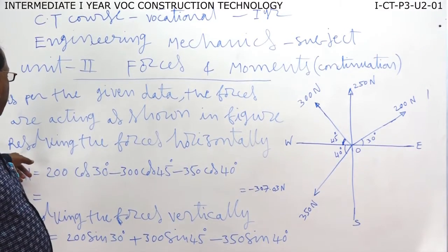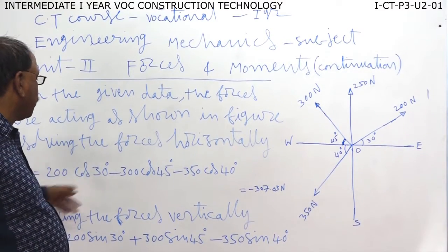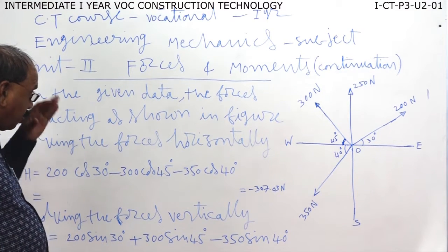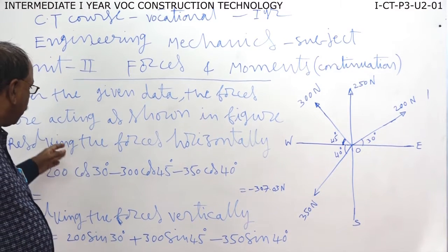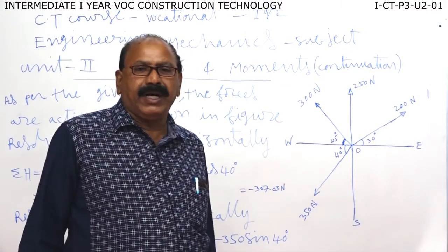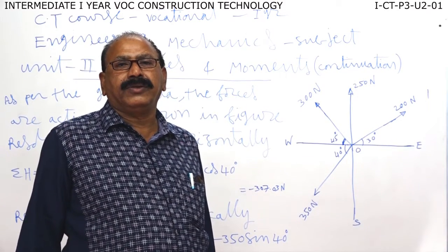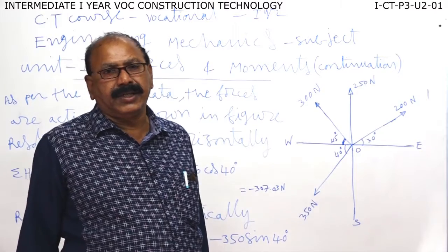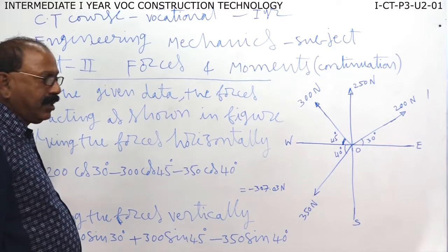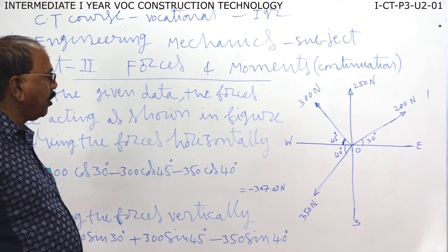First, resolving the forces horizontally — the forces are resolved. There are equilibrium conditions from that. We have already discussed: Sigma H is equal to 0, Sigma V is equal to 0, Sigma M is equal to 0. So, Sigma H is equal to 0. Resolving the forces horizontally, all forces.